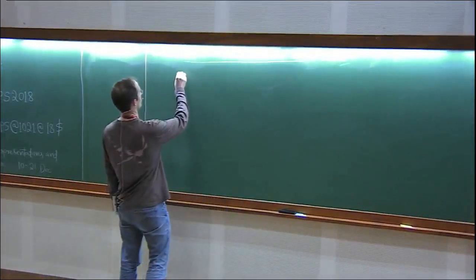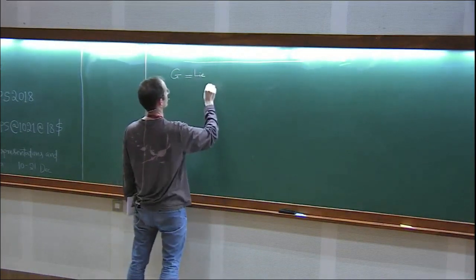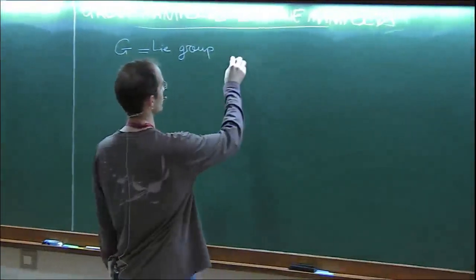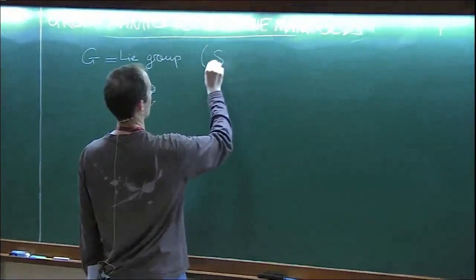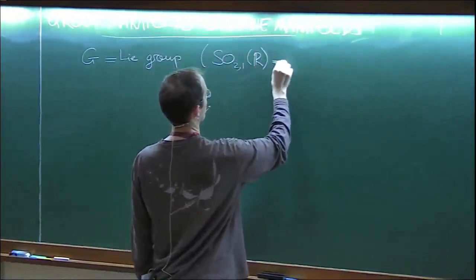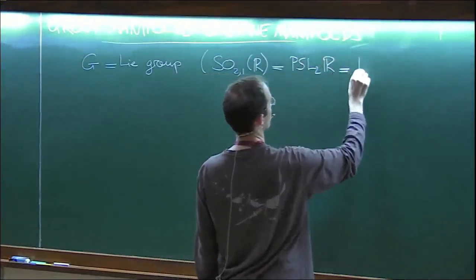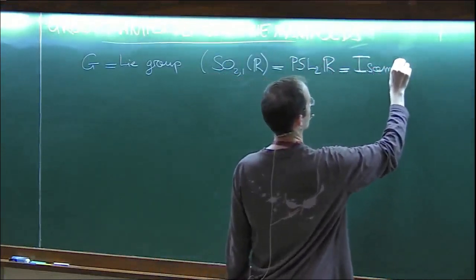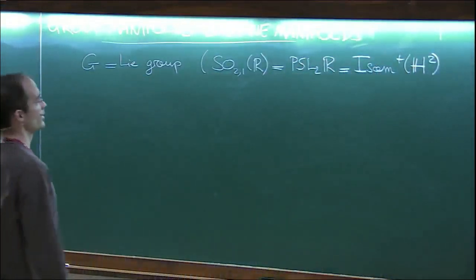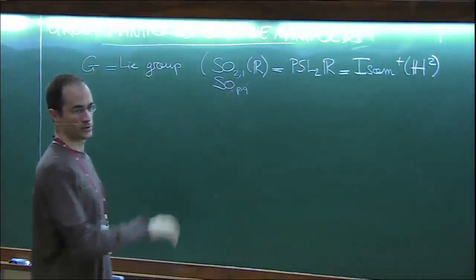By group manifolds, I will be meaning, let's take G a Lie group. In fact, in all the situations I will be really talking about, this will be either SO(2,1) of R, which is just the group PSL2R of isometries of the hyperbolic plane, or maybe SO(p,q). But it will not get any fancier than this.